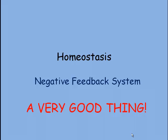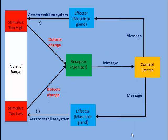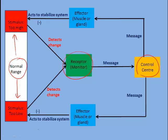Homeostasis involves a stimulus and a response, and we'll take a look at the general model here to see how this works. Different bodily functions occur within a normal range, be it a normal body temperature, a normal blood pressure, normal hormone levels, and if they begin to stray out of the range, either too high or too low, this creates a stimulus to some sort of a receptor or monitor, and that message that we're out of the normal range is conveyed to a control center.